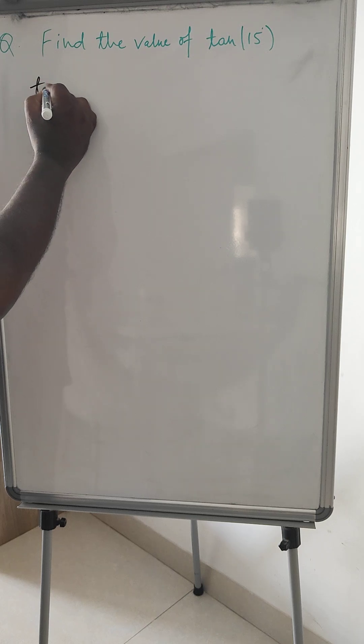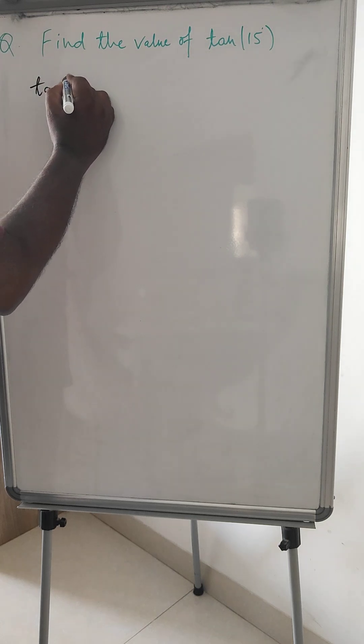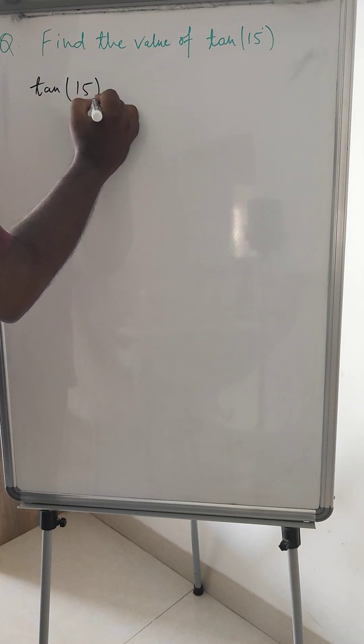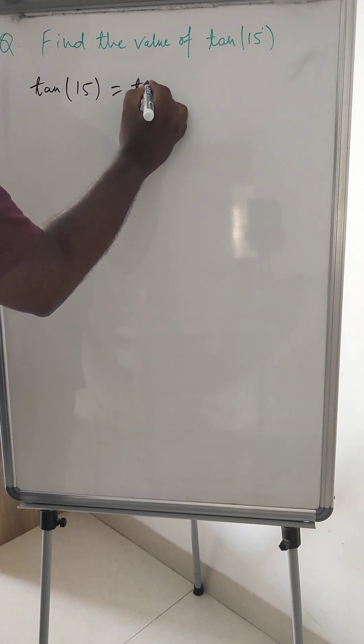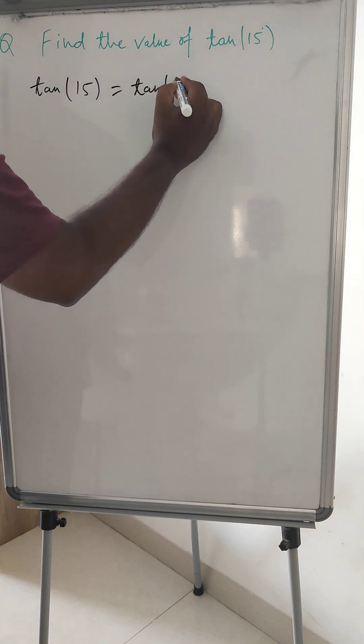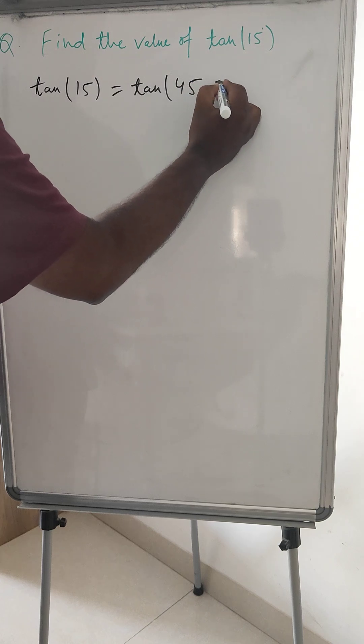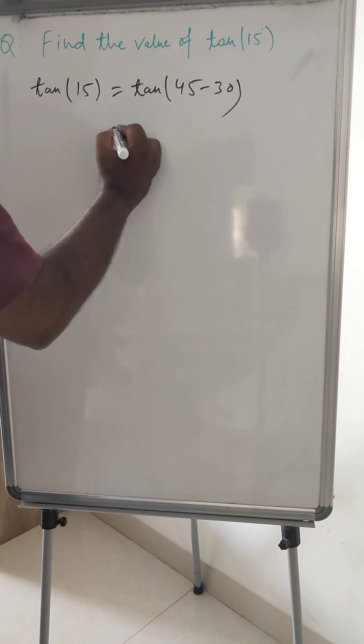So let's start doing this. tan 15 is equal to, we can write like tan 45 minus 30.